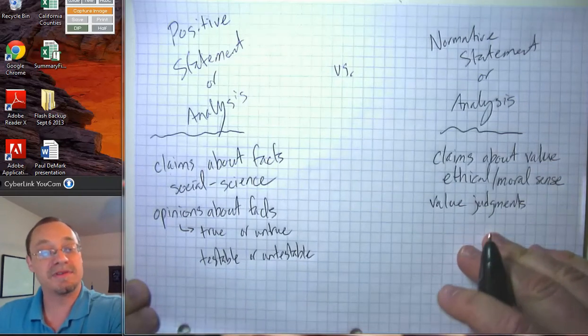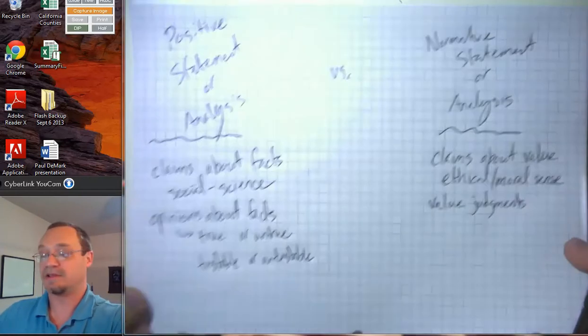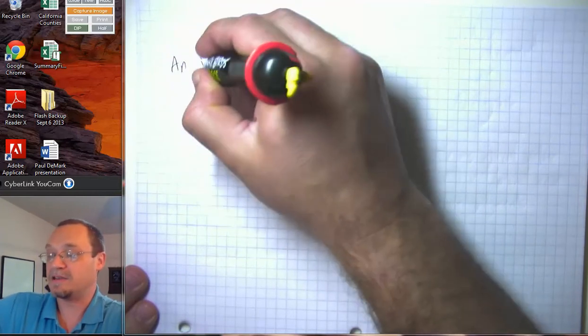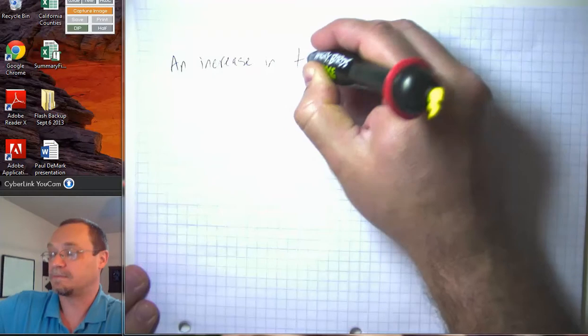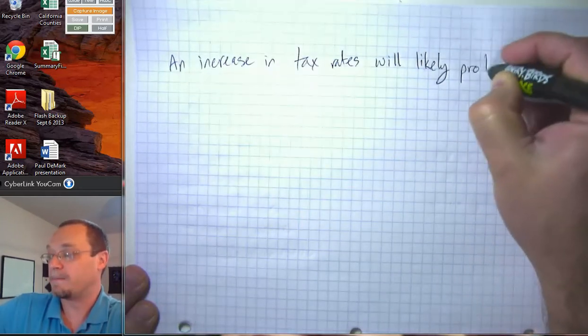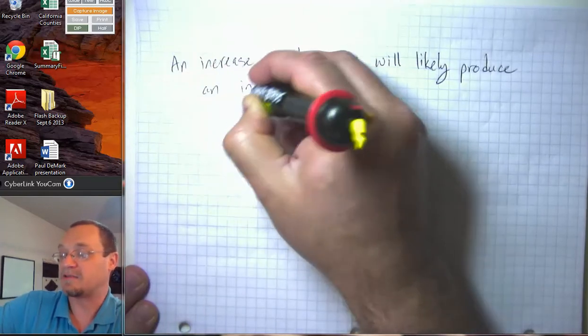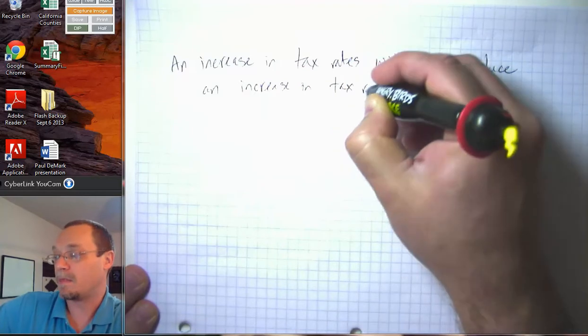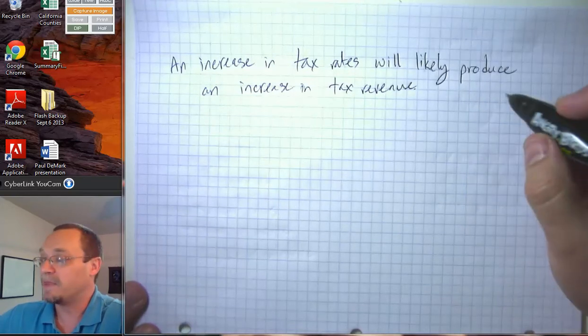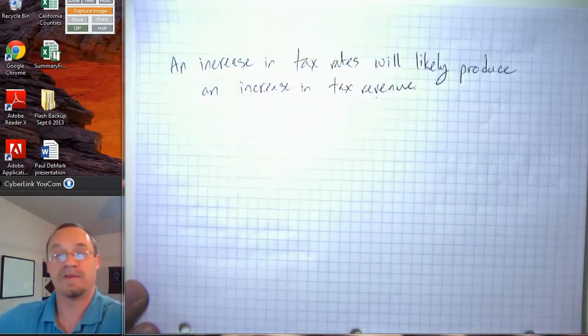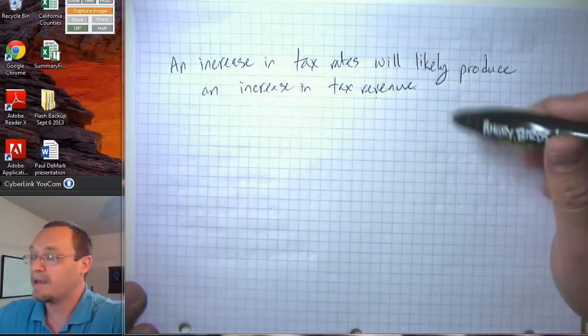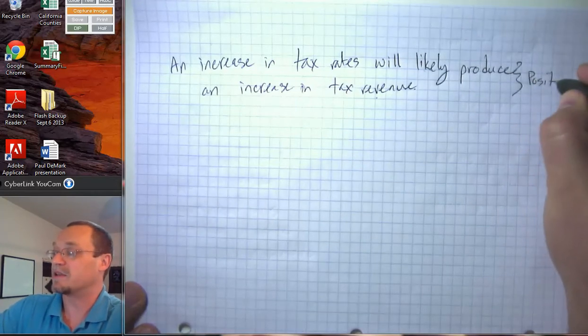So suppose someone says an increase in tax rates will likely produce an increase in tax revenue. Is that a positive or normative claim? Well, it's a claim about a cause and effect. That either will or it won't happen. It's something that we could hope to test with evidence. So this is a positive statement because it's a claim about facts.